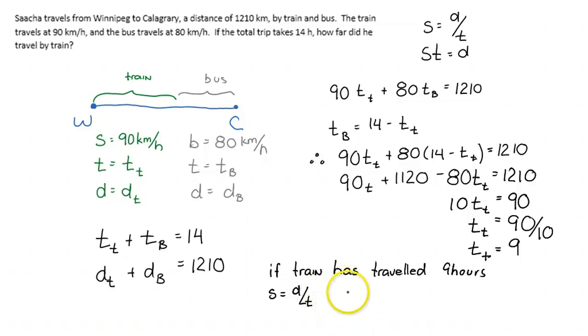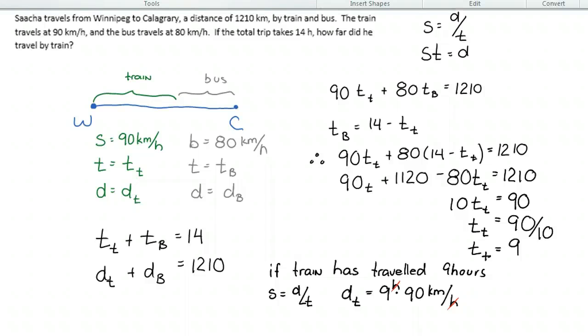So, if the train has traveled 9 hours, and we know that speed is equal to distance over time, we can say that the distance of the train is going to be 9 times 90 kilometers per hour. And notice, like I was saying, the cool thing here is 9 hours, 90 kilometers per hour, the hours units will actually cancel out. So that's why units are so great. They provide a little check in our work. So 9 times 90 is 810 kilometers. So therefore, he traveled 810 kilometers by train.